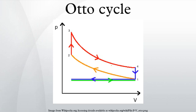Process 3 to 4, Expansion Stroke: The increased high pressure exerts a force on the piston and pushes it towards BDC. Expansion of the working fluid takes place isentropically and work is done by the system on the piston. The volume ratio is called the isentropic expansion ratio. Mechanically, this is the expansion of the hot gaseous mixture in the cylinder, known as the expansion stroke.